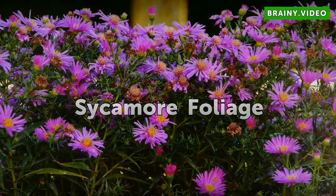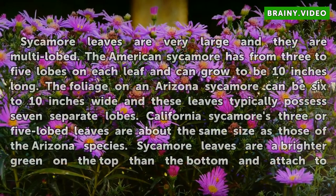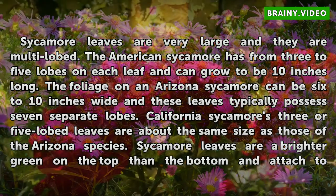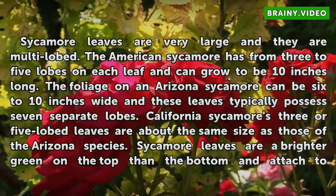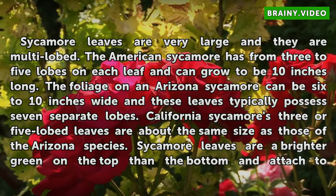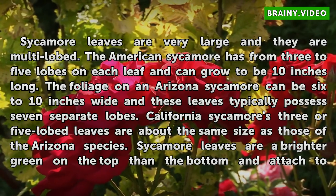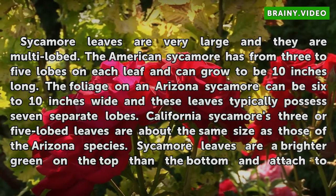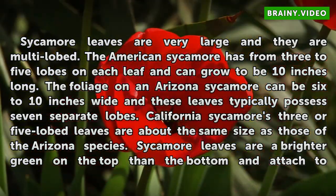Sycamore foliage. Sycamore leaves are very large and they are multi-lobed. The American sycamore has from 3 to 5 lobes on each leaf and can grow to be 10 inches long. The foliage on an Arizona sycamore can be 6 to 10 inches wide and these leaves typically possess 7 separate lobes. California sycamore's 3 or 5 lobed leaves are about the same size as those of the Arizona species.